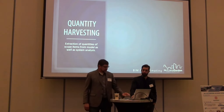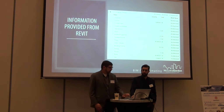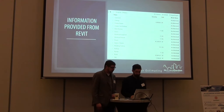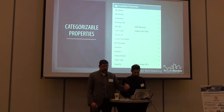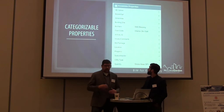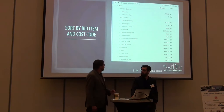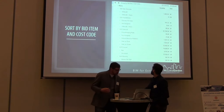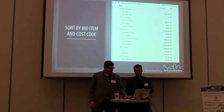Quantity harvesting is the extraction of quantities and scope items from the model, along with system analysis. This shows items that are included and how they're labeled when they come over into Symbl. We re-categorize them — for example, a cost code for a 3-hour wall — so we can identify it when applying prices. Once sorted by bid item and cost code, everything shows up as foundations, bid walls, slab items, stairs, and flatwork — organized exactly how we price within our system.